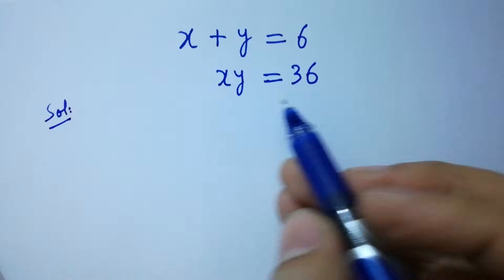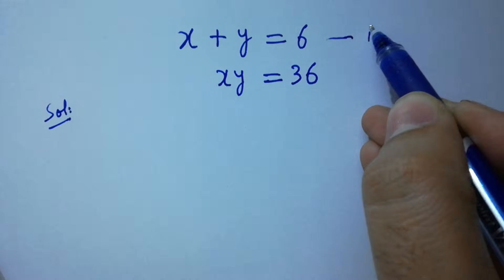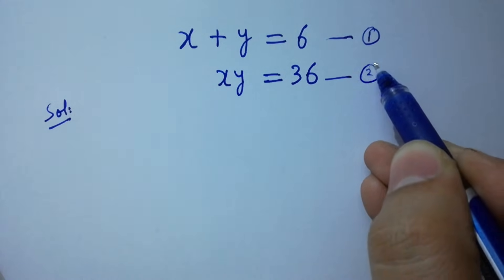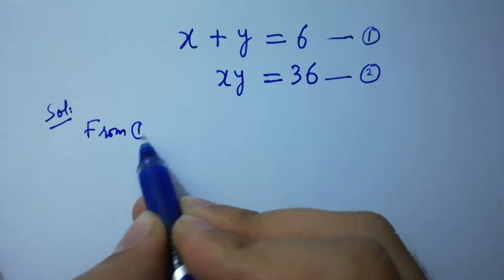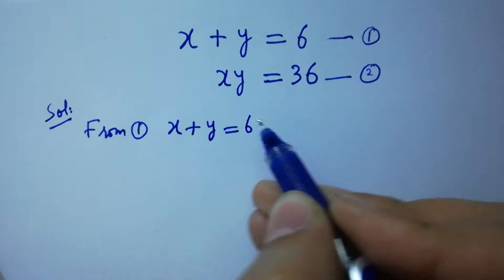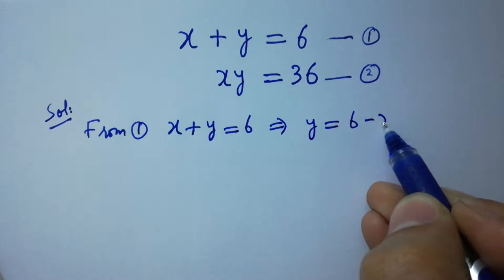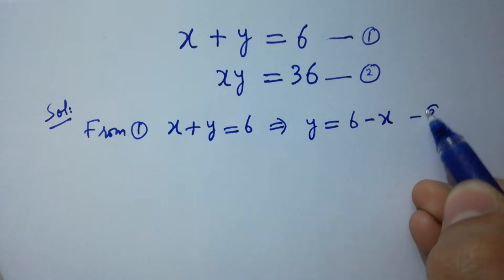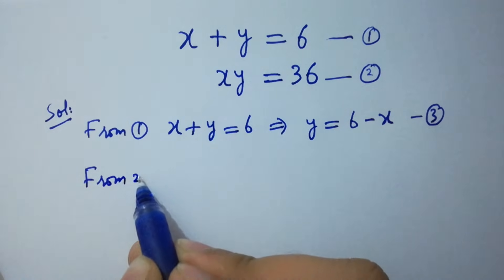To solve this, let x plus y equal to 6 be the first equation, and x times y equal to 36 be the second equation. From the first equation, x plus y equals 6, so y equals 6 minus x. Take this as the third equation.